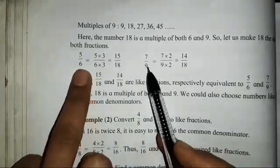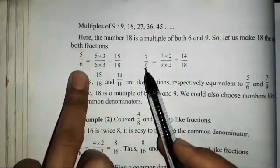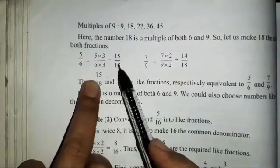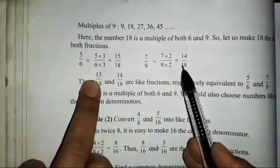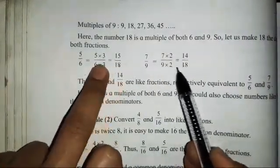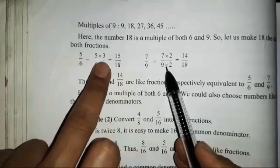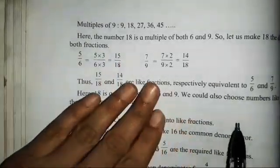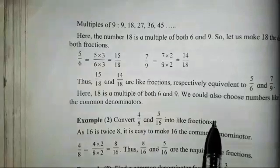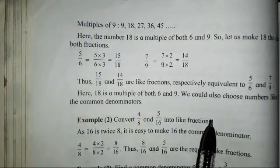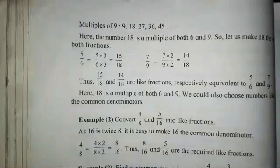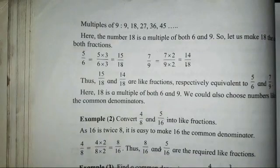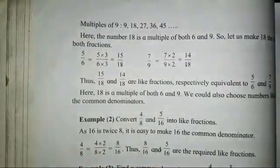Like over here, they have given 5 upon 6 and 7 upon 9. What — 6 threes are 18 and 9 twos are 18. So we get the denominators first, and then the same number you all have to multiply to the numerator. Everything has been explained in the previous exercises — you all can check the description box, the link will be provided there.